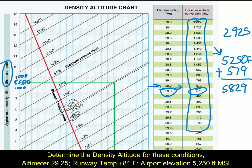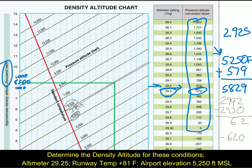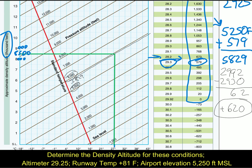To recap: this chart takes your altimeter setting and gives you the pressure altitude conversion factor. Another way to do it is to take 2992 and subtract your altimeter setting — so 2992 minus 2930 gives you 62, and adding a zero gives you 620 feet correction. Whether you use the chart and get 578 or calculate 620, the answer comes out about the same. It doesn't matter which method you use as long as you have an actual method.